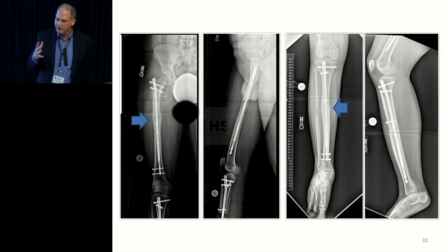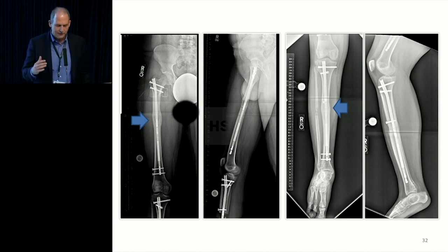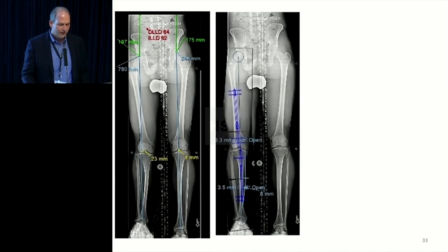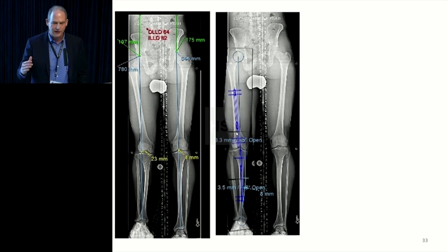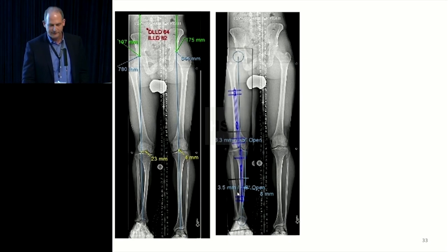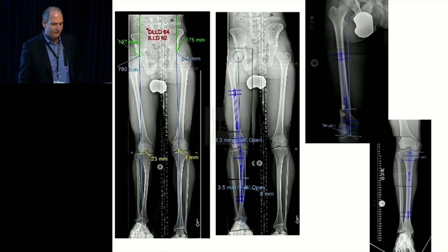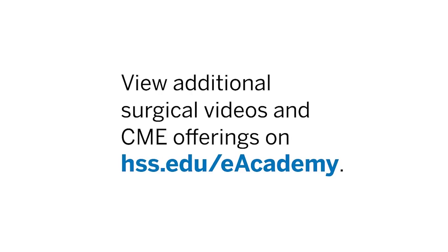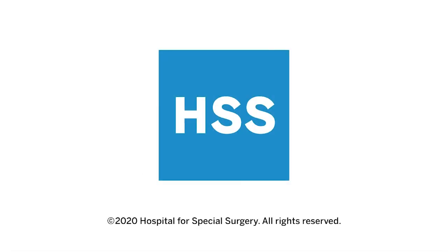Blocking screws can be a little confusing to place, but there are guidelines for really understanding where to put them. We are also using advanced PACS planning techniques where we do a virtual osteotomy, implant the virtual implant, and confirm that we have realigned the mechanical axis. This is the current way we're doing a lot of this planning — you can look at where to put your blocking screws and what your translation will look like exactly, essentially doing a virtual operation before you go into the OR.